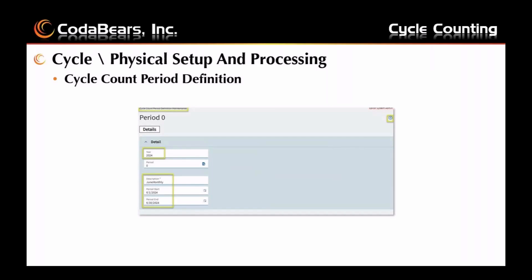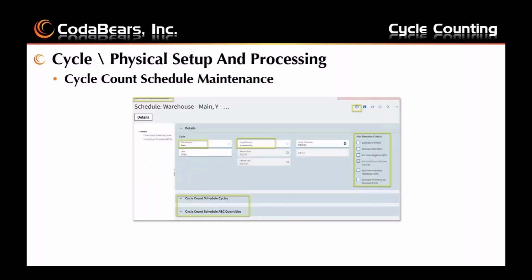Now for the actual setup when you're wanting to start a cycle or physical count, the first step is defining your Cycle Count Period Definition. These are set up before you get counting and usually the inventory manager will set these up in full Epicor. Periods can be defined based on how frequently you count your parts — for example, if your lowest count frequency is monthly (30–31 days) it makes sense to define monthly cycle count periods, but if some parts need weekly or bi-weekly counts, define periods accordingly. You create a new cycle count by entering a year, a description, and the start and end date — Epicor will assign the cycle period once saved.